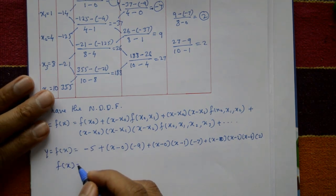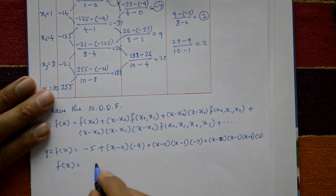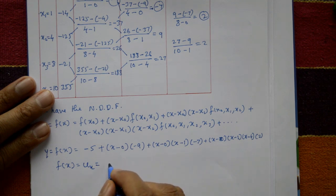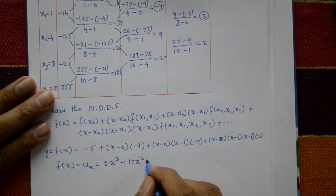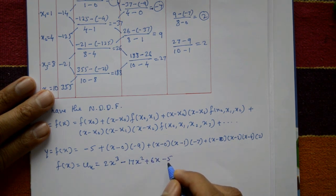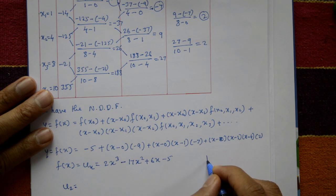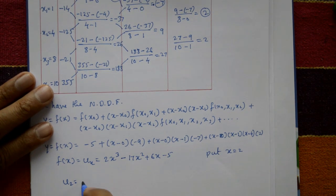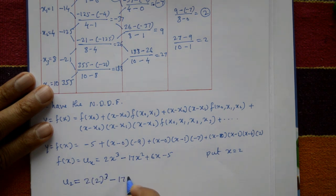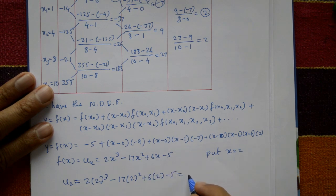Opening the brackets and simplifying, F(x) = 2x³ - 7x² + 6x - 5. This is the required polynomial equation. To find u2, put x = 2: u2 = 2(2)³ - 7(2)² + 6(2) - 5 = 16 - 28 + 12 - 5 = -45. This is the required solution.